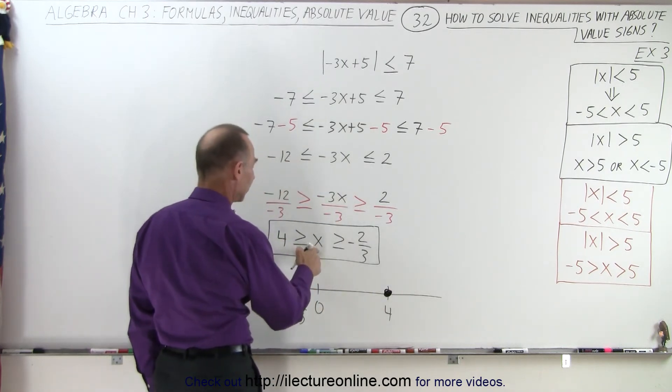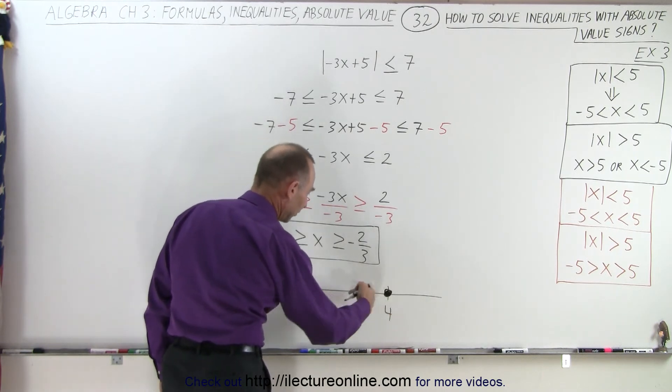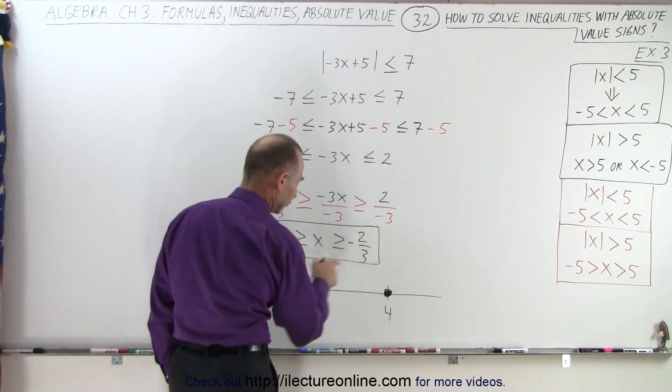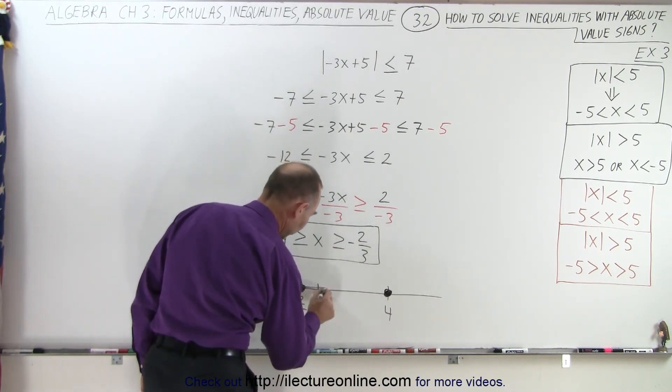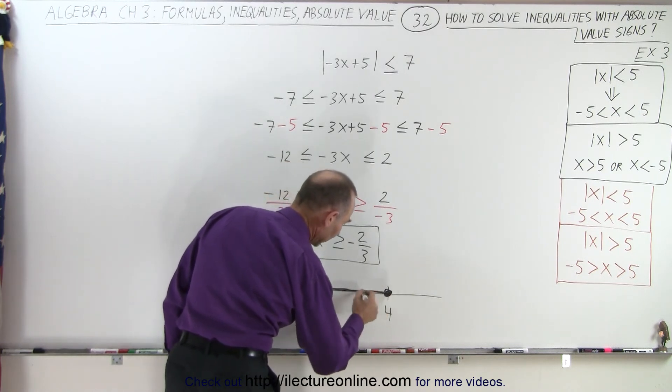And notice x is smaller than 4, which is to the left of 4, and x is greater than negative 2 thirds, which is to the right. So it's actually the region in between those two values.